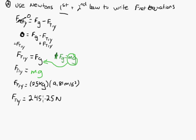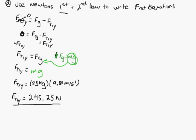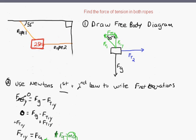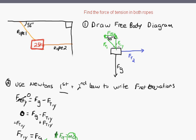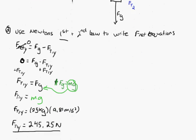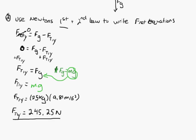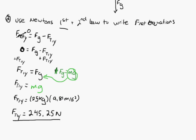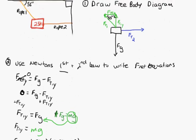Typing that into the calculator gives force tension one in the y equal to 245.25 newtons. So that's the force acting upward on our box.